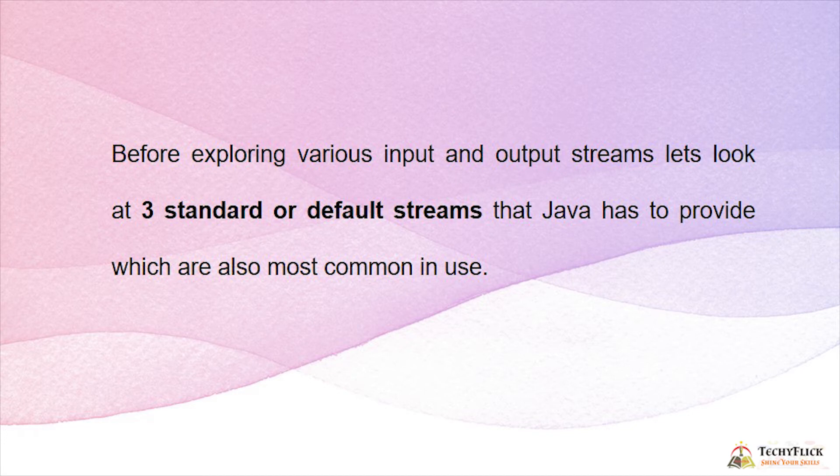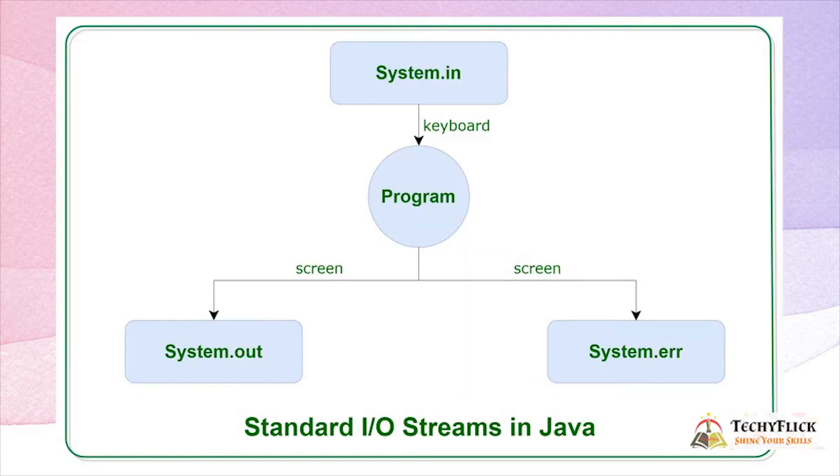Before exploring various input and output streams, let's look at three standard or default streams that Java has to provide, which are also most common in use. They are System.in, System.out, and System.err. These are the three important standard input-output streams in Java.